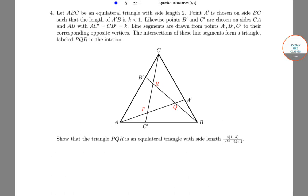Hello students, welcome to Sorosers classes. The question is: let ABC be an equilateral triangle with side length 2.